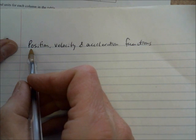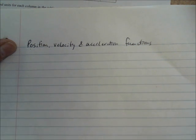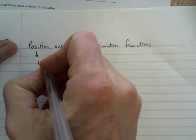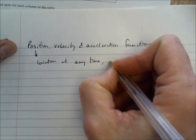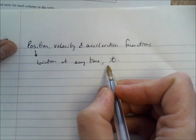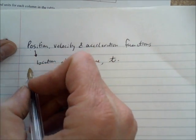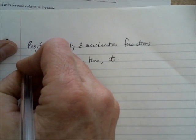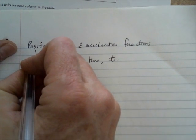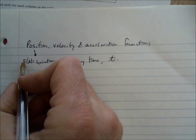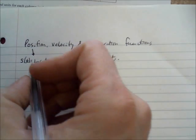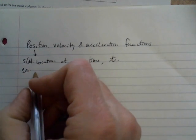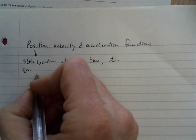A position function gives the location of an object at any time t. Usually time is represented with the variable t, and usually the position function is represented by an s. So s of t just means the position of the object at any point t — it just gives that location. Let's work with a specific example for today.